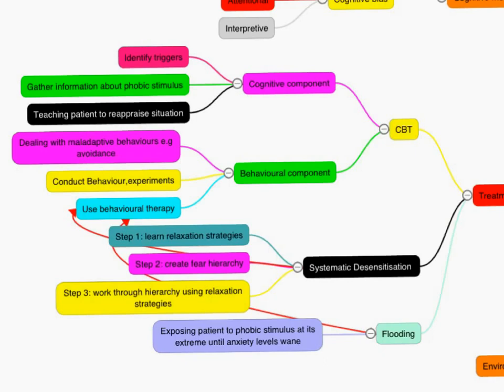Alternatively, we could use the less effective flooding, where we expose the patient to the phobic stimulus at the extreme. And given that our allostatic systems are limited in how long they can maintain an intense phobic response, in terms of our adrenaline levels, our heart rate, our blood pressure, eventually, we'll run out of energy. The allostatic systems will run out of energy, and the actual fear response, the anxiety levels, will start to wane. They'll gradually reduce. And we'll get used, or conditioned, to being exposed to our phobic stimulus at the extreme.